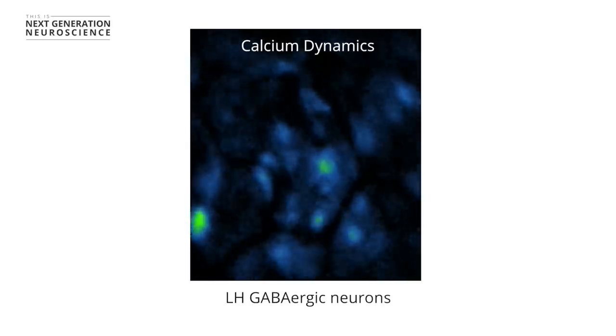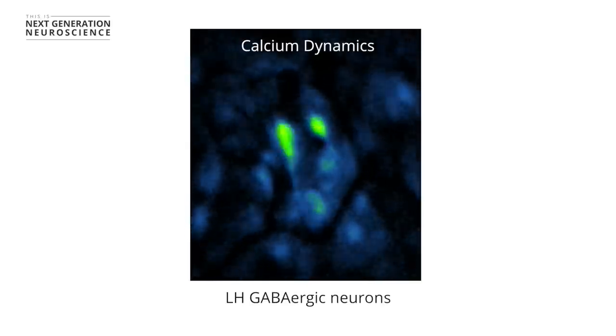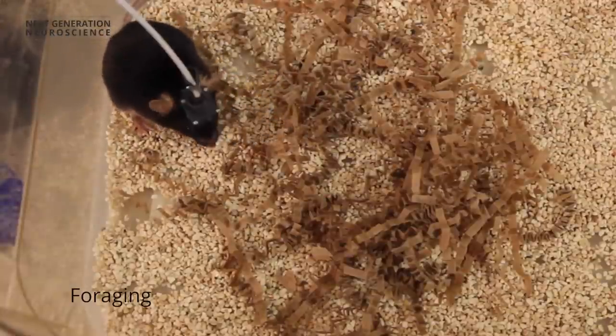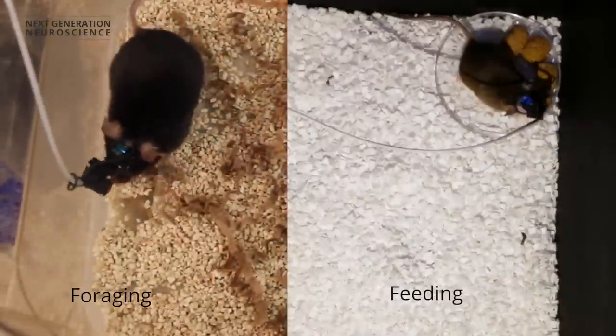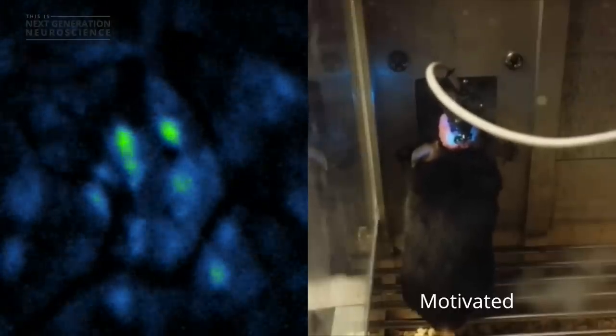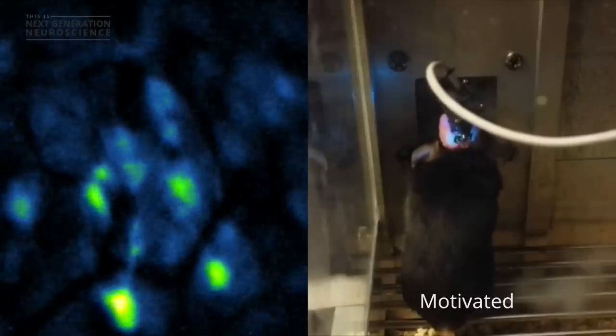And so in doing that, we could record the activity selectively of these cells during naturalistic behavioral tasks, such as foraging behavior, feeding behavior, as well as motivated behaviors where the animals had to work and respond for the food.